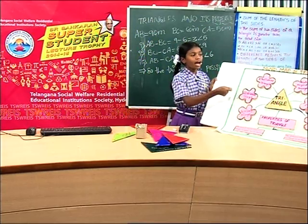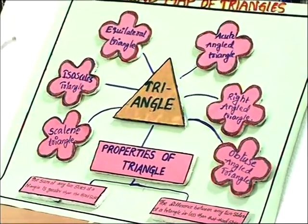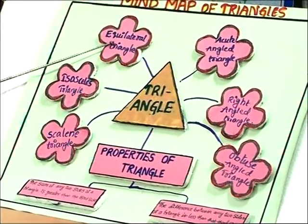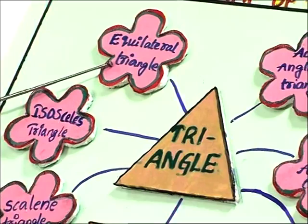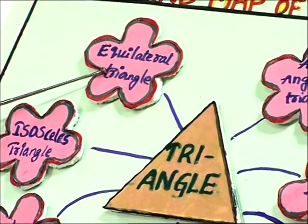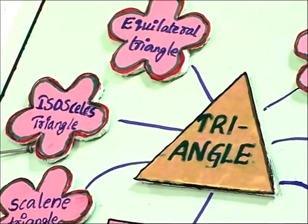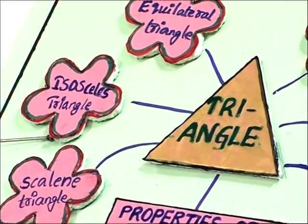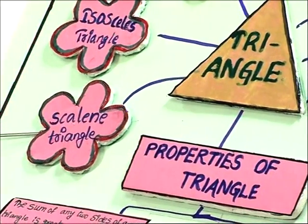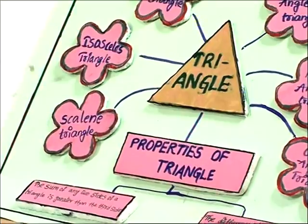Mind map of a triangle. This triangle is classified into two types: based on sides and based on angles. Based on sides: equilateral triangle — all three sides are equal; isosceles triangle — two sides are equal and one is different; scalene triangle — all three sides are different.